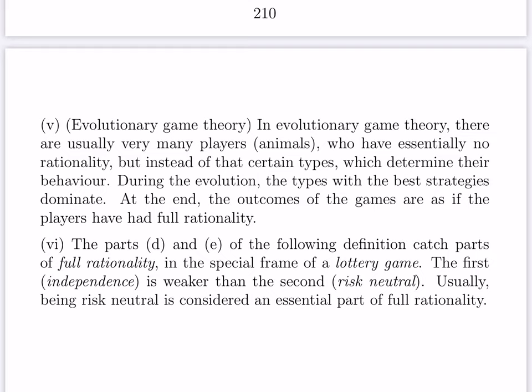Next comes the definition where the last two parts d and e capture some aspect of full rationality in the special case of a so-called lottery game. The first way is called independence — it is weaker than the second way, which is called risk-neutral. Risk-neutral is usually considered an essential part of full rationality.